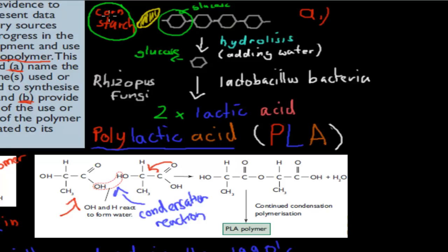We then perform hydrolysis — the addition of water — to break the bonds between the glucose molecules. By adding water, we break those bonds and produce individual glucose molecules. That's the first step: starch to individual glucose via hydrolysis. Now comes the part we definitely need to know — the specific use of enzymes or organisms involved.